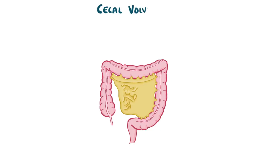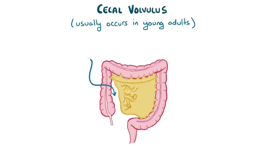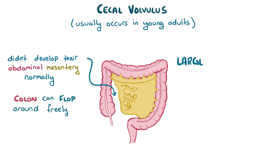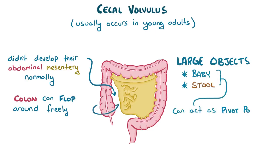A cecal volvulus is usually found in young adults, and usually happens in individuals who didn't develop their abdominal mesentery normally during fetal development. Since some mesentery attachments might be missing in these individuals, the colon can flop around freely, and any large object — like a baby in pregnancy or a load of stool in someone that's constipated — can act as a pivot point in the cecum and cause the colon to twist.